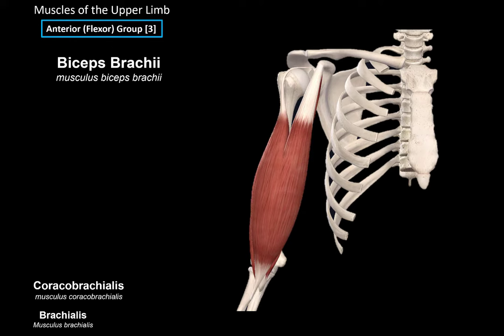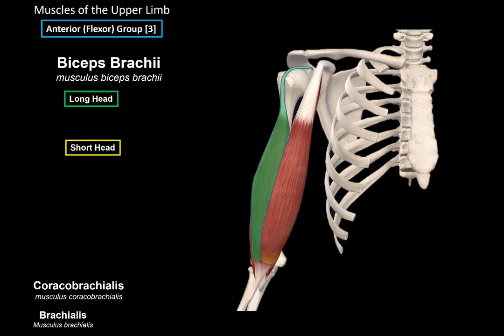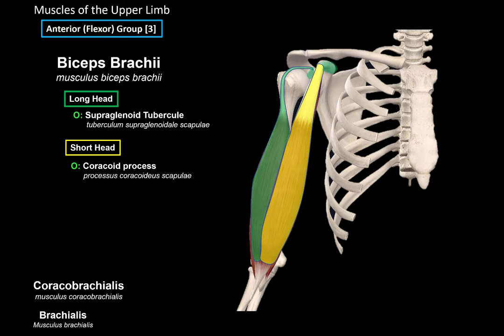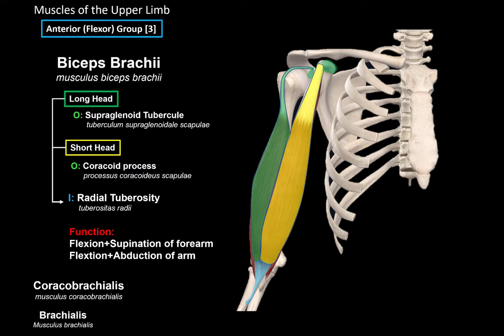The last muscle of the anterior group is the biceps brachii muscle. It's called biceps, so it consists of two parts — a long head and a short head. The long head originates from the supraglenoid tubercle, and the short head originates from the coracoid process of the scapula. The two heads then unite and insert at the radial tuberosity of the radius. This muscle is responsible for flexion and supination of the forearm, and also flexion and abduction of the arm.